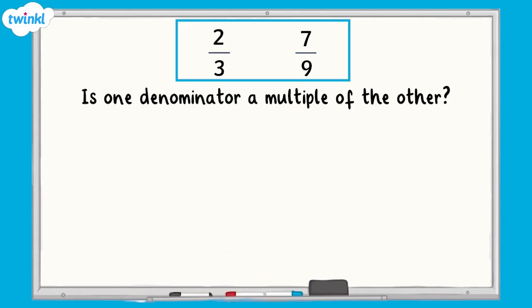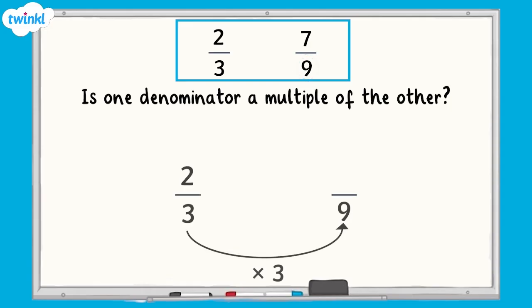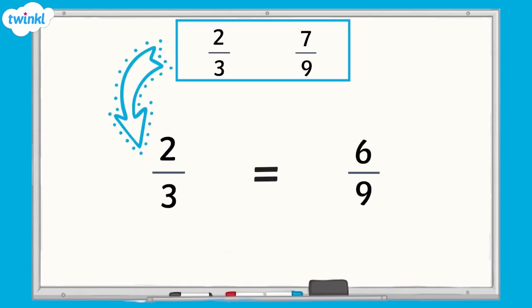We can see that 9 is a multiple of 3, so the answer is yes. 9 will be our common denominator. I know that 3 multiplied by 3 equals 9, so I must apply the same rule to the numerator. 2 multiplied by 3 equals 6. So 2 thirds is equivalent to 6 ninths.